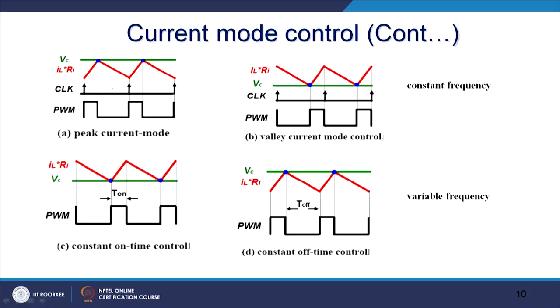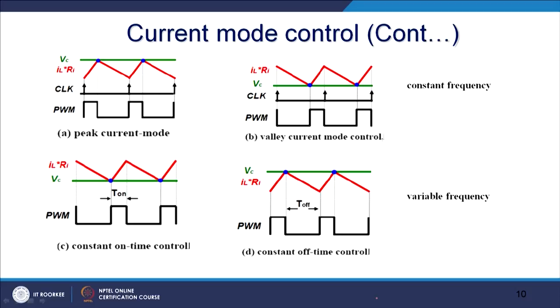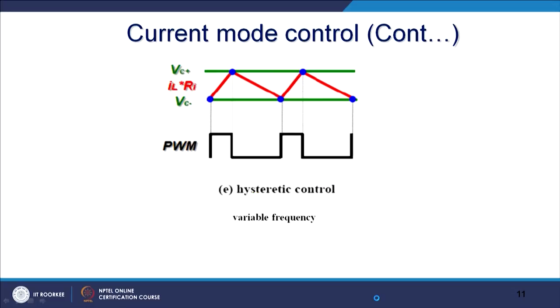This is peak current mode control. In constant on-time control, frequency will change but the value of T_on will be constant. In constant frequency control, the values of T_on and T_off will vary but the frequency stays the same. Similarly, you can have constant off-time control.